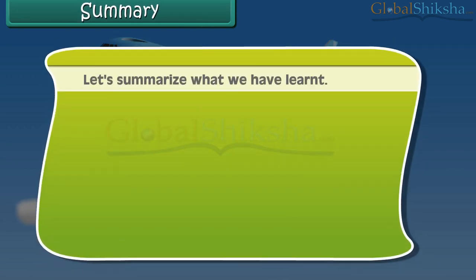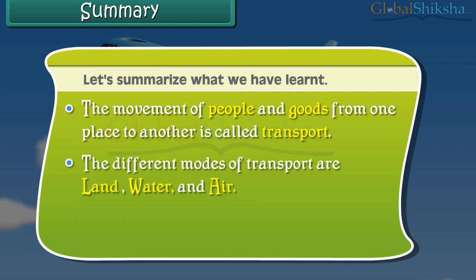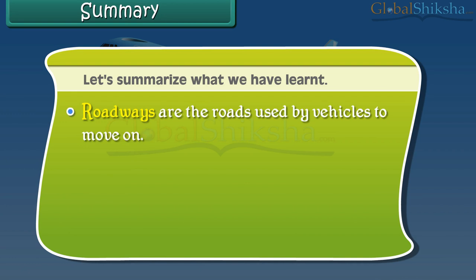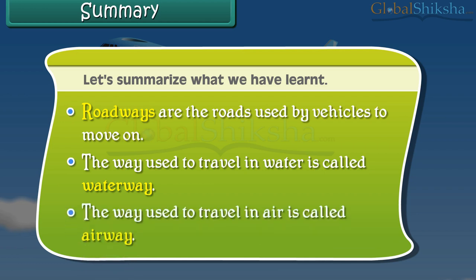Now friends, let's summarize what we have learned. The movement of people and goods from one place to another is called transport. The different modes of transport are land, water and air. Railways are the road tracks over which trains run with the help of wheels. Roadways are the roads used by vehicles to move on. The way used to travel in water is called waterway, and the way used to travel in air is called airway.